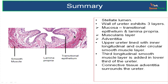Mucosa has got 2 layers: epithelium, which is specific for the urinary tract — that is, the transitional epithelium or urothelium — and a lamina propria. The muscle layer: the upper ureter is lined with inner longitudinal and outer circular smooth muscle layers; the lower ureter has an additional outer longitudinal smooth muscle layer.